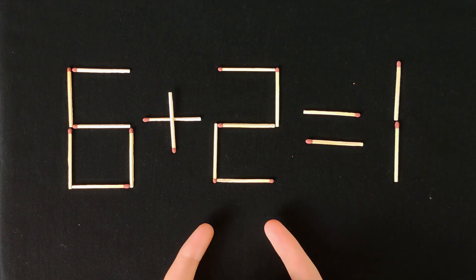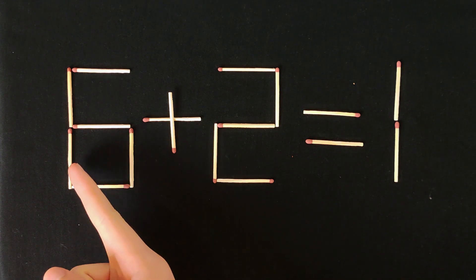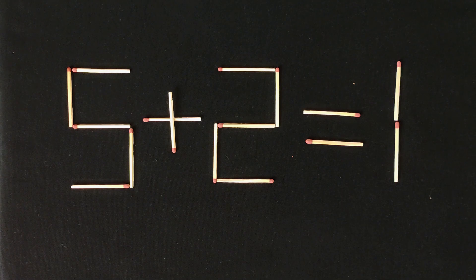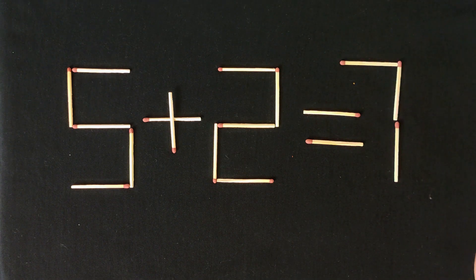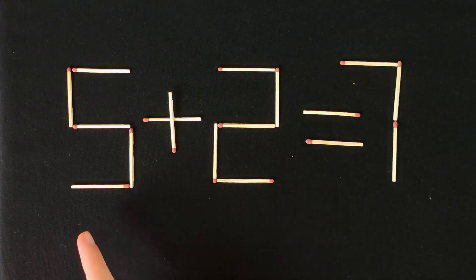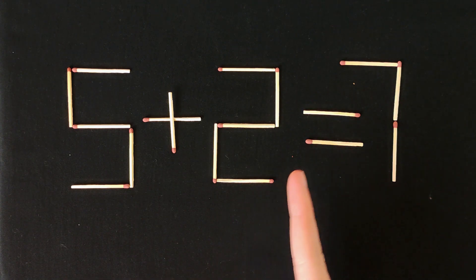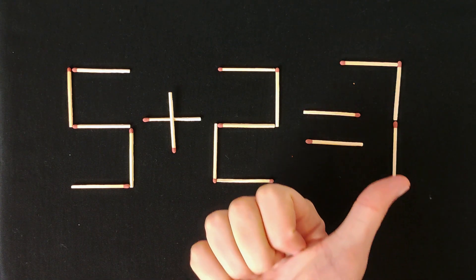And right now I'll show you how it's solved. You need to move this match from this place to here. And now, yes, and now 5 plus 2 equals 7. It's correct equation.